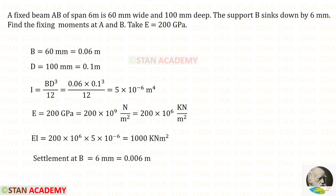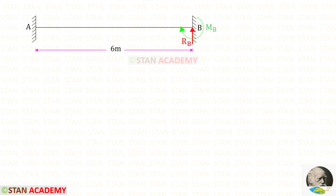The settlement at B is given in millimeters. Dividing by 1000 converts it to meters. From point B about point A, we are going to find the bending moments and draw the bending moment diagram. We follow the left-hand side rule: clockwise is negative and anti-clockwise is positive.